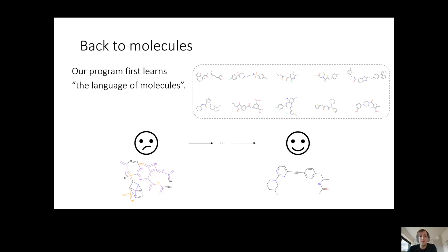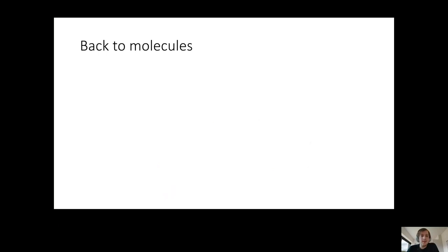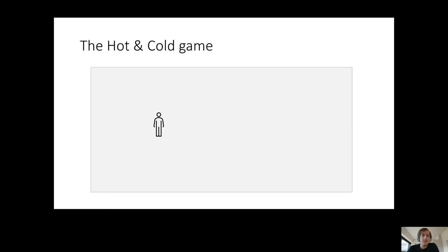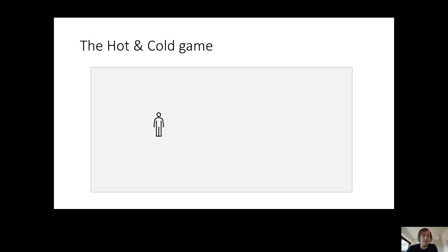So how do we go from this to molecules that satisfy our initial goal? We have this program that can dream up many reasonable molecules. A useful analogy that applies to the real world is the hot and cold game, which is a game that children play. You start in some room trying to find some object hidden somewhere you don't know, but you're given feedback based on how close or how far you are from the goal.